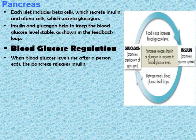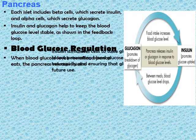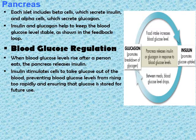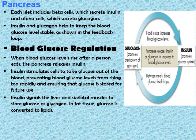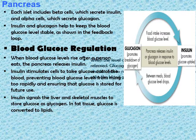When blood glucose levels rise after a person eats, the pancreas releases insulin through the beta cells. Insulin stimulates cells to take glucose out of the blood, preventing blood glucose levels from rising too rapidly and ensuring that glucose is stored for future use. Insulin signals the liver and skeletal muscles to store glucose as glycogen, a storage form of sugar, and in fat tissue, glucose is converted to lipids.